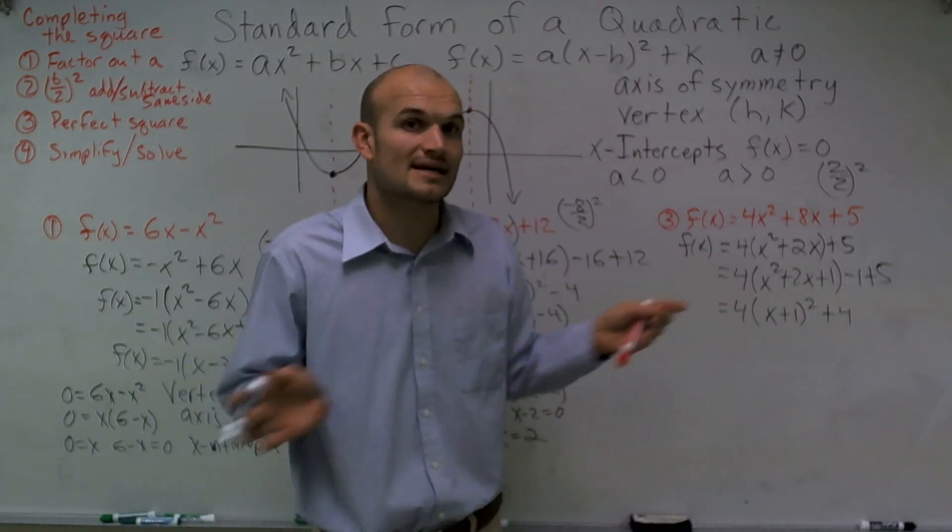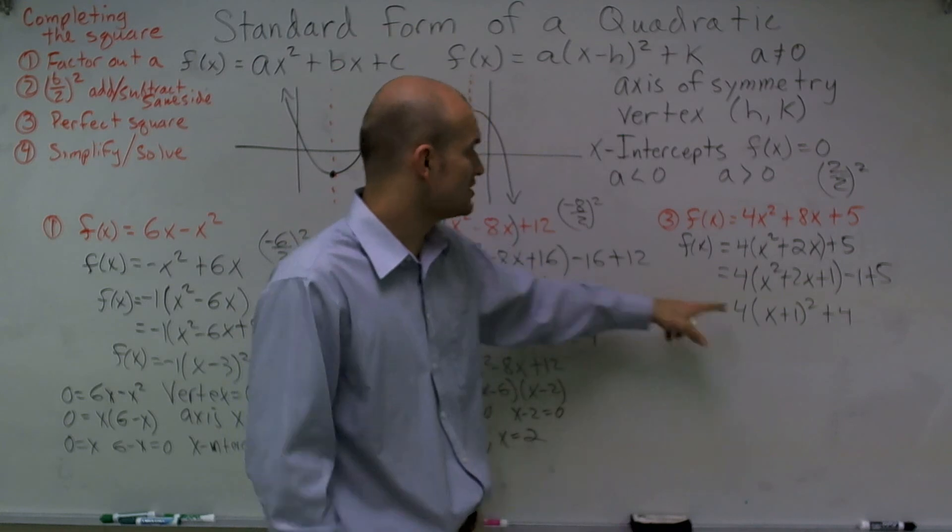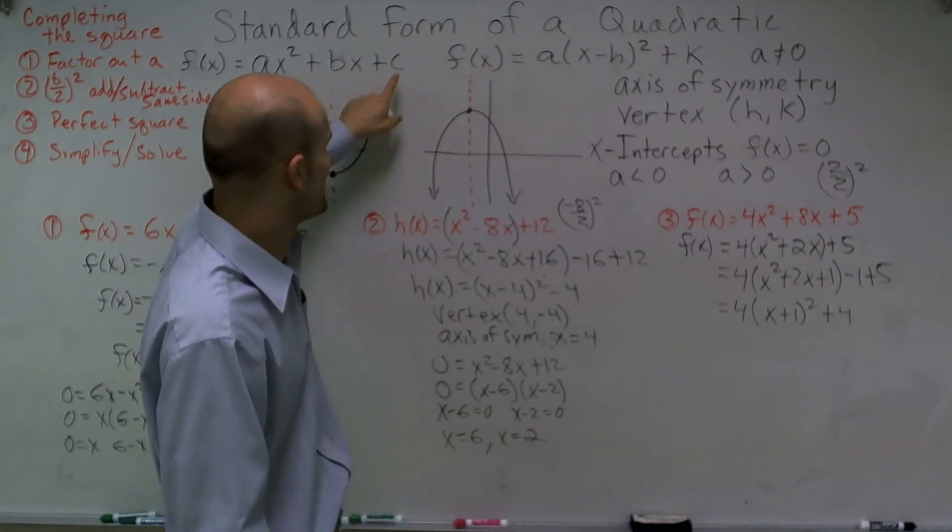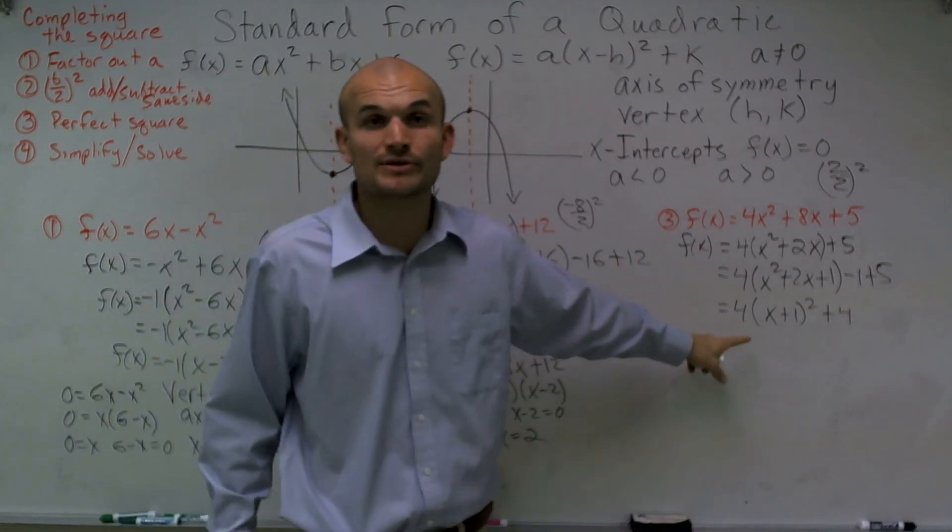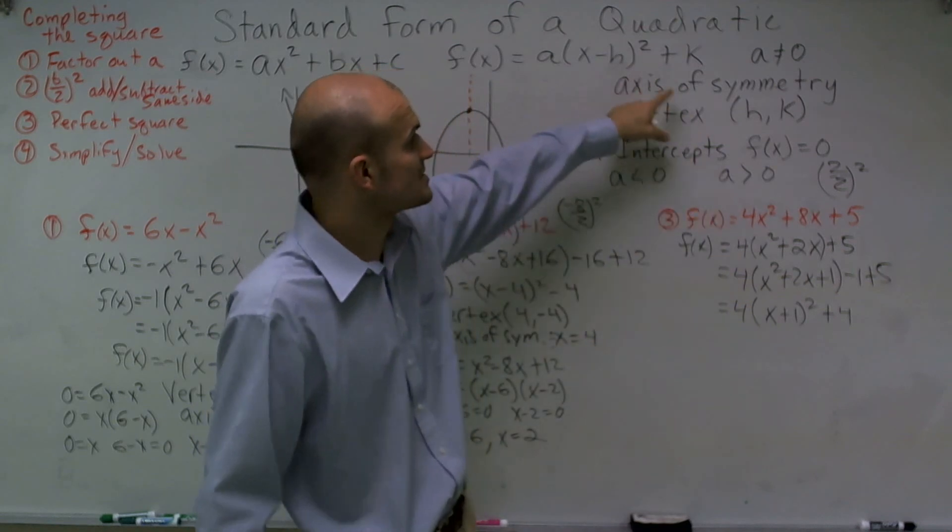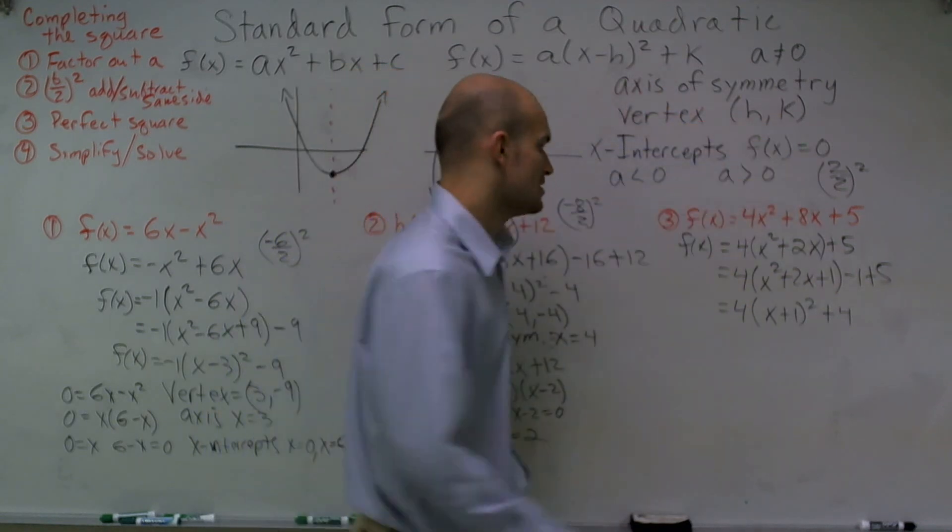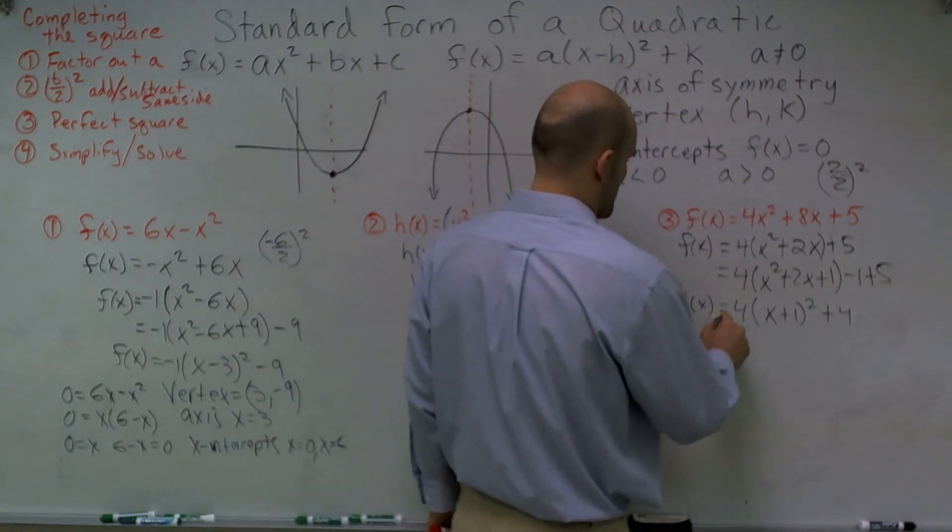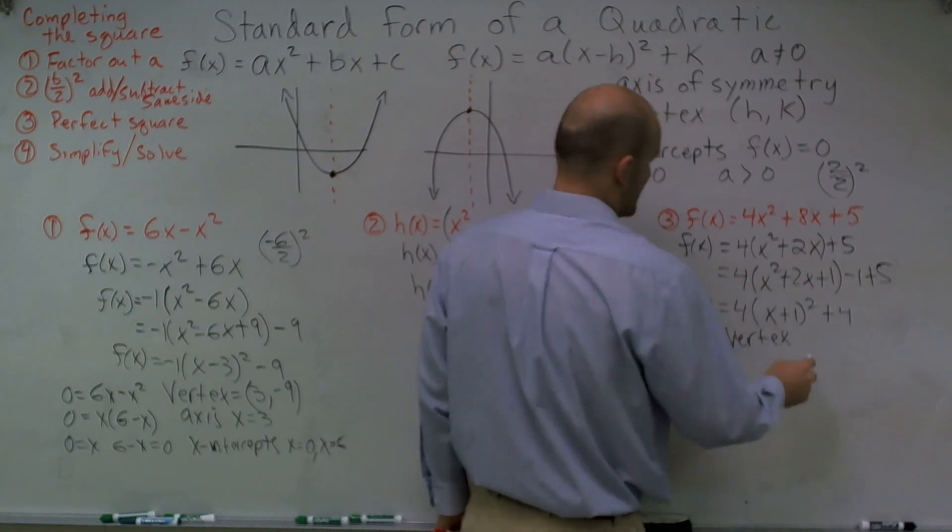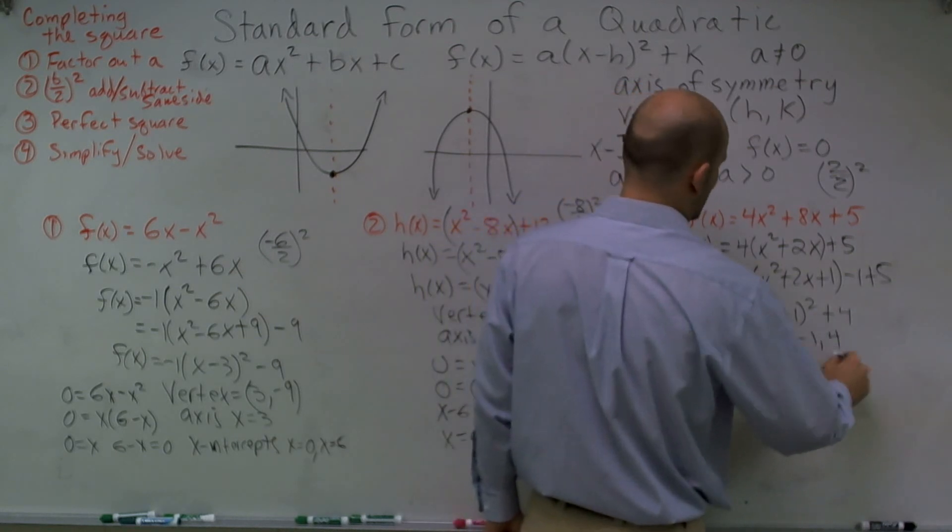This 4 is going to tell me that's a stretch and compress, but it's also going to remind me that my graph is opening upwards. It's not going to affect my vertex because my vertex is hk. So the vertex of this problem is going to be -1, 4.